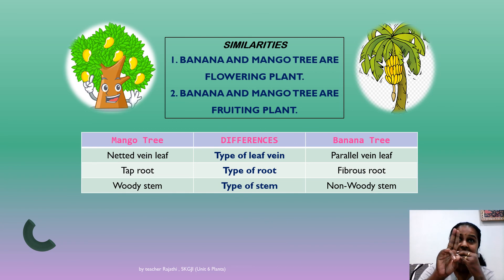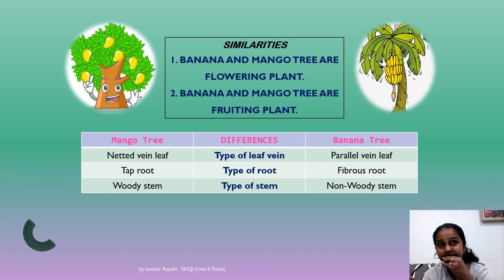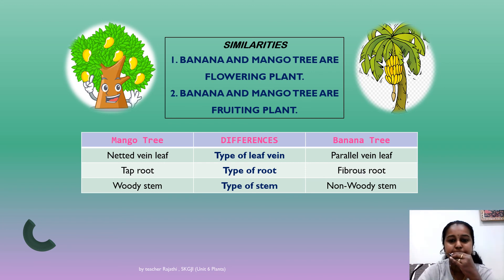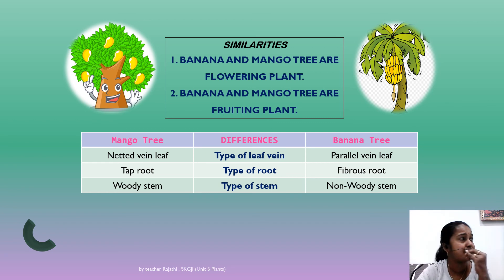Now the differences — things that are not the same. For example, the type of leaf vein: the mango tree has netted veins and the banana tree has parallel veins. You can write the differences in a table form — it is easier that way.